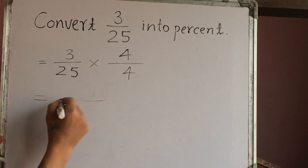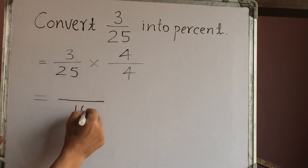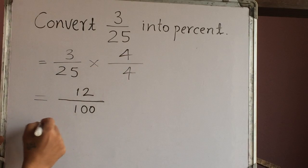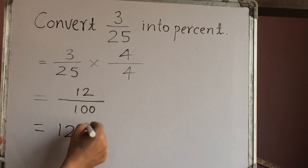Now we have here 25 times 4 is 100, 3 times 4 is 12, which is 12 out of 100. That means you can write here 12%.